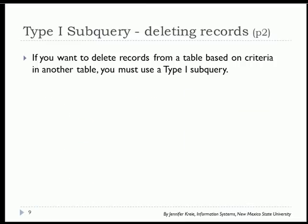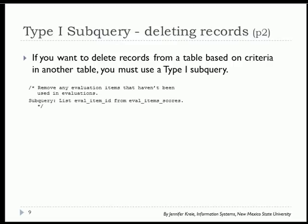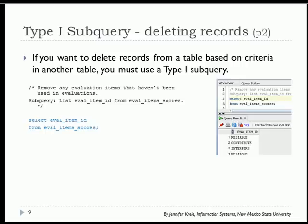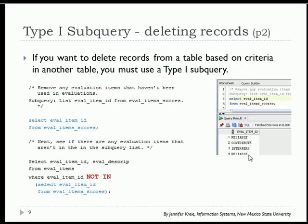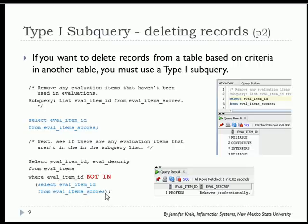Let's look at another example of doing a deletion: remove any evaluation items that haven't been used in an evaluation. The subquery will list all the eval_item_IDs from eval_item_scores. When I look at all of them I see: reliable, contribute, interpersonal, and repetition, reliable, and so on. When I put that in a type 1 subquery, I'm saying show me eval_item_ID and eval_description where eval_item_ID is NOT IN the list from eval_item_scores.